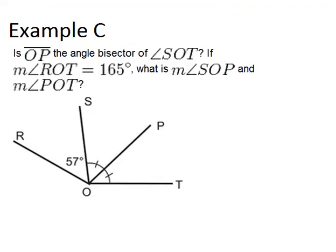And on to the last example. Is OP the angle bisector of angle SOT? So that means, does OP cut angle SOT in half? So that's the first question. Let's do that first. Well, in this picture, angle SOT is right here. And it's saying, is OP the center line, the angle bisector? Well, I can tell by these two angle markings that those two angles are congruent, which means that OP has to be the angle bisector because it does cut it into two congruent pieces. It cuts the angle into two congruent angles, that is. So the answer to the first question is yes.